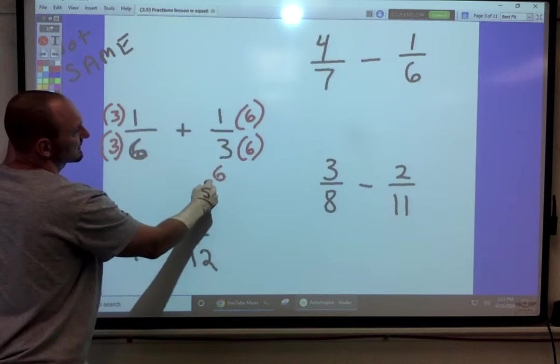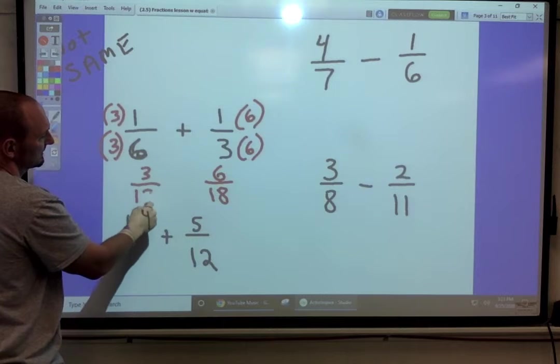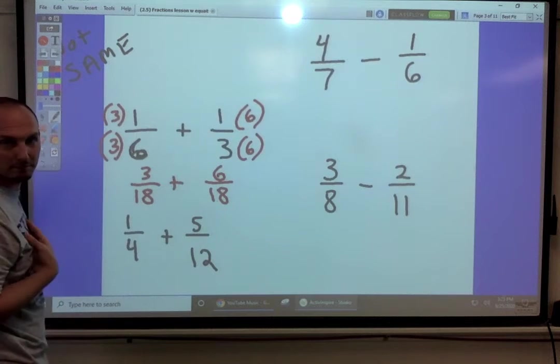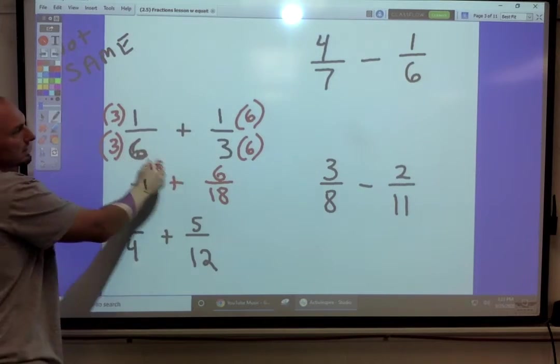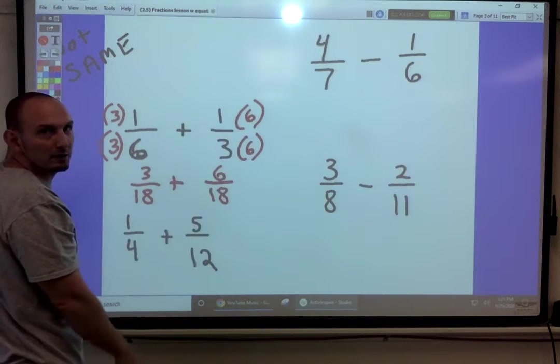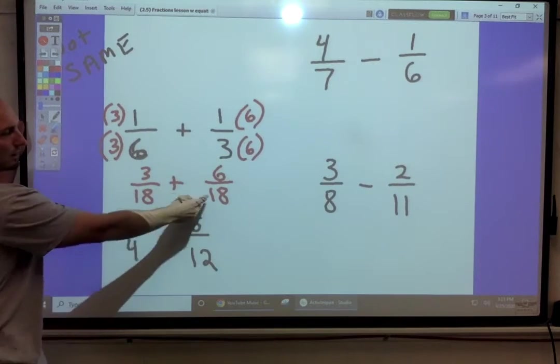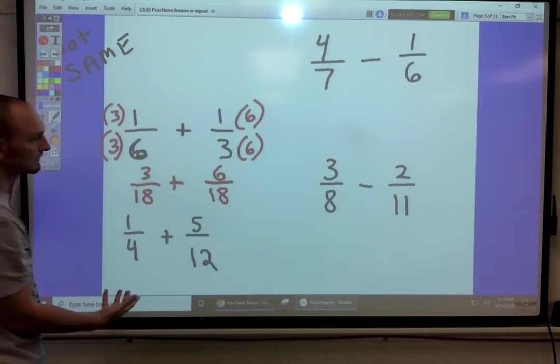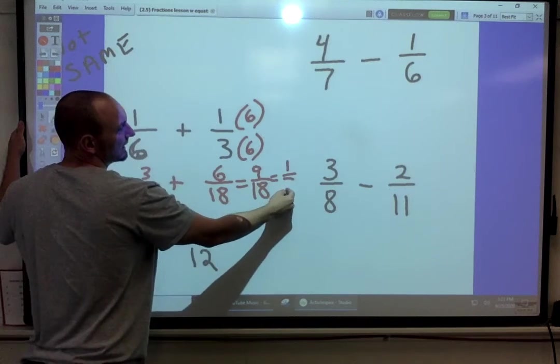That is three-eighteenths. And then add it that way. So that always works. If you don't know your multiplication too well, we can take this denominator, multiply that fraction by it, take that denominator, multiply that fraction by it. We'll always get like denominators. We'll get the same answer eventually, because nine-eighteenths is really one-half.